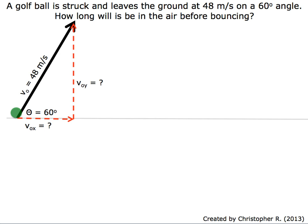All right, we're doing a type 2 projectile problem. In this one, a golf ball is struck and leaves the ground at 48 meters per second on an angle of 60 degrees. How long will it be in the air before bouncing?